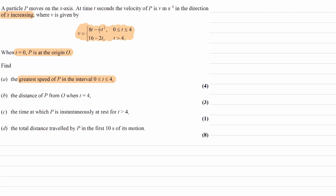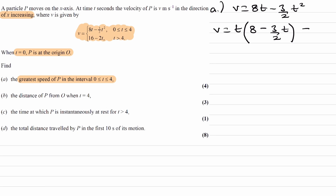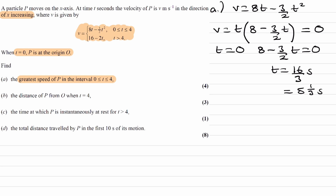What we have here is a quadratic. The coefficient for t squared is negative, and therefore the shape of the graph is an inverted parabola. Let's factorize: we can take out t, so this becomes t times (8 minus 3/2 t). Setting this equal to 0 to find the roots, we get t equals 0 and 8 minus 3/2 t equals 0, giving t equals 16/3, which is the same as 5 and a third. So after about 5.3 seconds, the velocity will be 0 again.